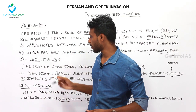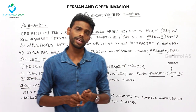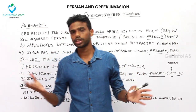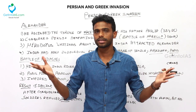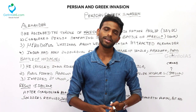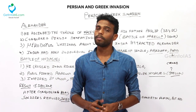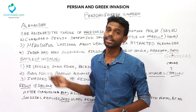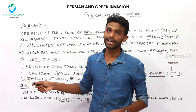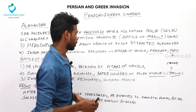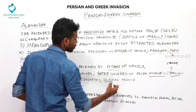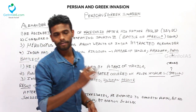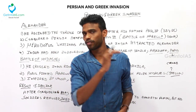In the Battle of Hydaspes, Porus fought against Alexander with his army. Finally Porus got defeated, as Alexander was a powerful ruler with a great army. However, seeing Porus's valor and bravery, Alexander reinstated him on his throne and appreciated him for his courage. This is what happened in the Battle of Hydaspes.